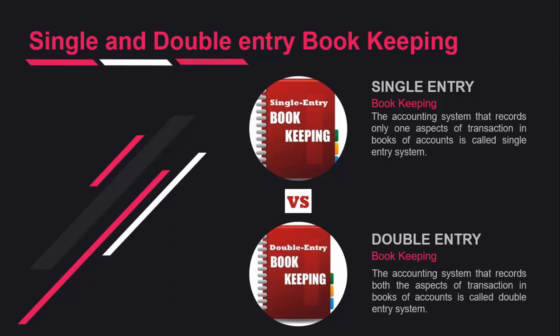On the other hand, double entry bookkeeping means that both aspects of a transaction are recorded in the books of accounting. We record not only one aspect but both aspects — that is, both the debit and credit sides. So the difference is: single entry bookkeeping records only one aspect of a transaction, while double entry bookkeeping records both aspects — debit and credit.